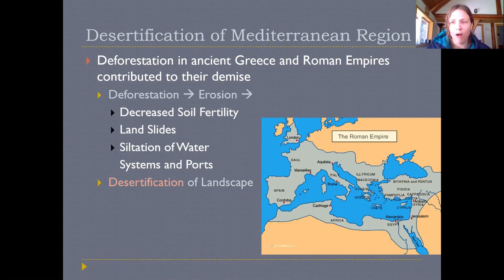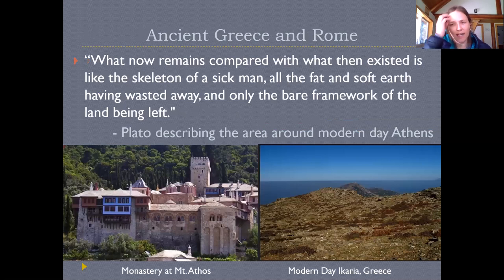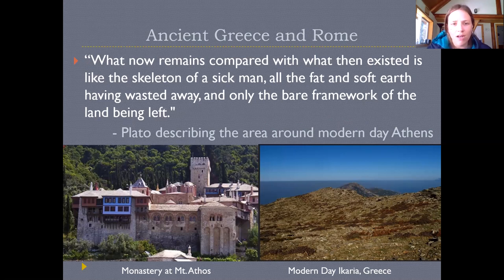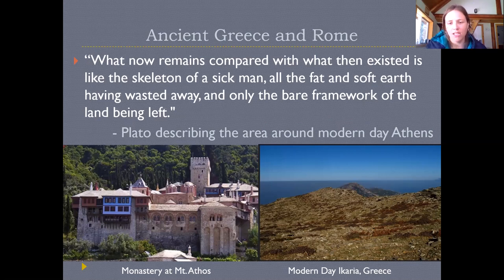In Greece there's a monastery at Mount Athos that has been around for thousands of years, surrounded by true cedar forests. This is completely at odds with the normal ecosystem seen in most of Greece today, which is much more barren and desert-like. This illustrates what desertification looked like in that part of the world, where people mismanaged landscapes and left themselves with much lower-productivity ecosystems. Even Plato had quotes describing what he saw as mismanagement of the landscape.